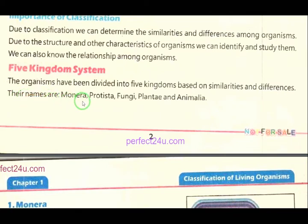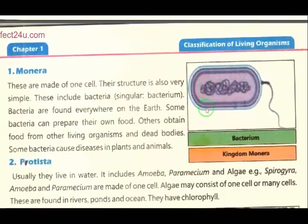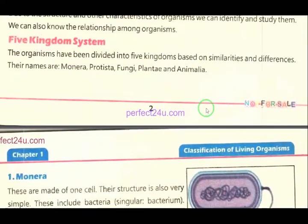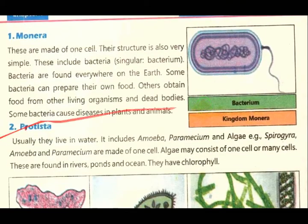The names of the five kingdoms are: Monera, Protista, Fungi, Plantae, and Animalia. Da pinzau ghatu groupunu nomuna sari: Monera, Protista, Fungi, Plantae, Animalia. Now we will discuss each one in detail.